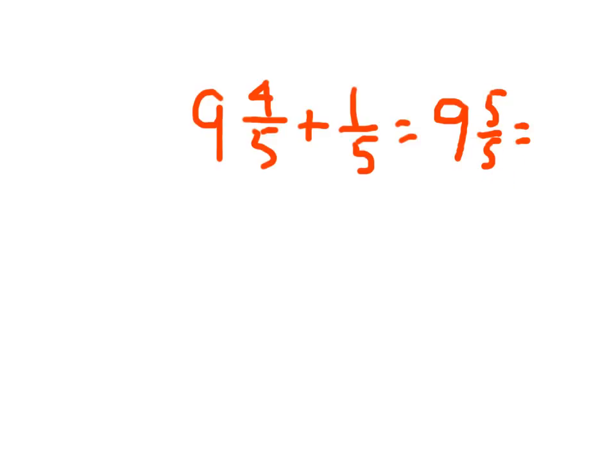One whole. And then so if we put one whole with that nine, we get the answer of ten. And that makes sense. If we had nine and four-fifths and we just added one more fifth to it, we would be at ten.